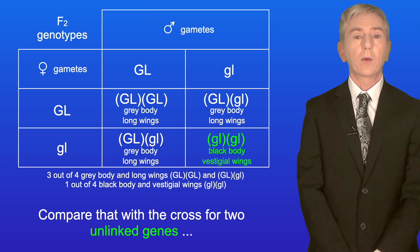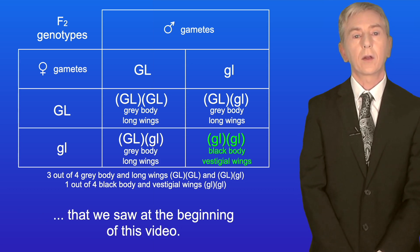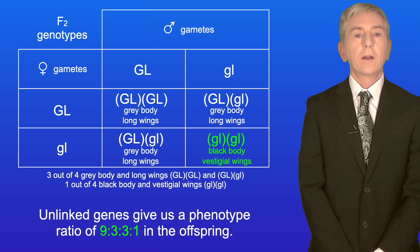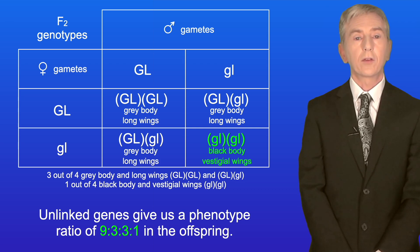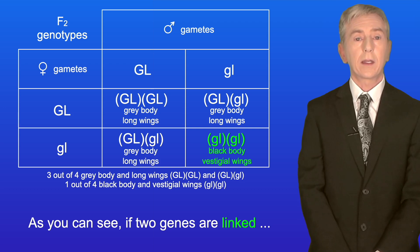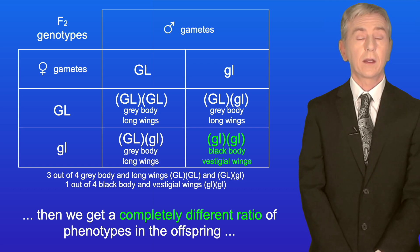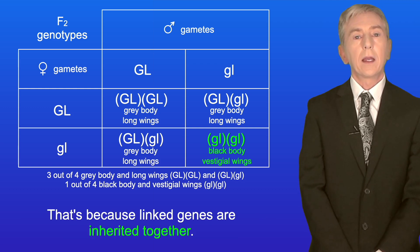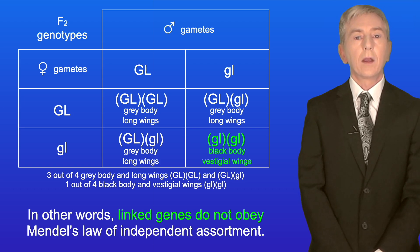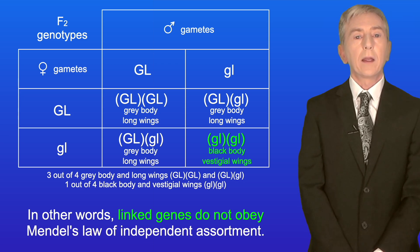Compare that with the cross for two unlinked genes seen at the beginning of this video. Unlinked genes give us a phenotype ratio of 9:3:3:1 in the offspring. So if two genes are linked, we get a completely different ratio of phenotypes compared with two genes that are unlinked, because linked genes are inherited together. In other words, linked genes do not obey Mendel's Law of Independent Assortment.